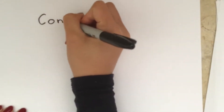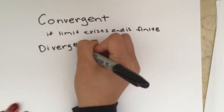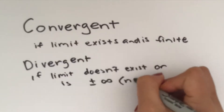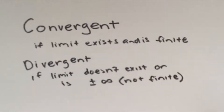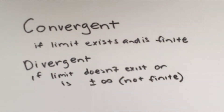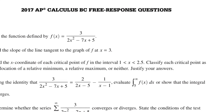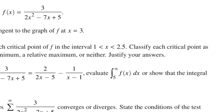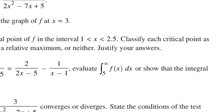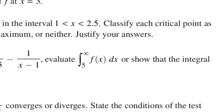Let's get some definitions out of the way. We'll call an integral convergent if the associated limit exists and is a finite number, and divergent if the associated limit either doesn't exist or is plus or minus infinity. When evaluating improper integrals, you'll often be asked to determine if the integral is convergent or divergent, and if convergent, to find its value.